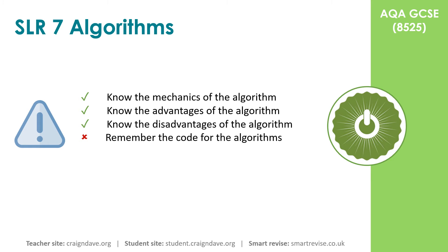The specification at GCSE requires you to know the mechanics of an algorithm. You should understand the advantages and disadvantages of using one algorithm over another to solve the same problem. However, at GCSE level, you're not going to be expected to remember the code line for line for a given algorithm. In the rest of this video, we're going to walk through an example of this algorithm step by step.